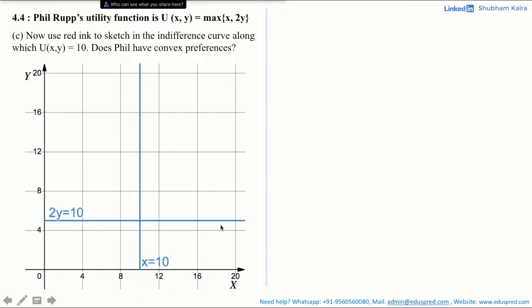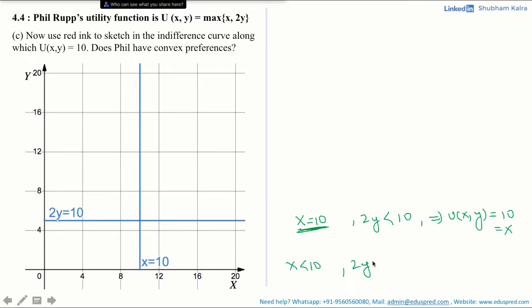This horizontal line represents the equation 2y = 10. In the previous part we learned that when x = 10 and 2y < 10, the utility function takes the value of 10, which is simply x. And when x < 10 and 2y = 10, the utility function also takes the value of 10, since 10 equals 2y.